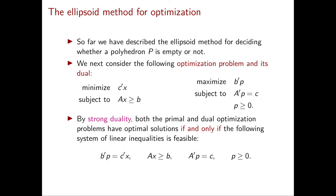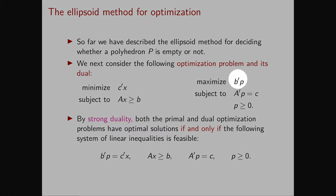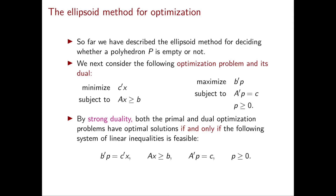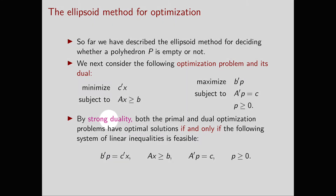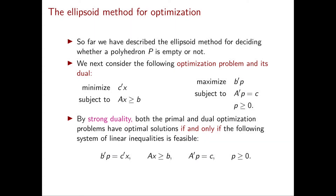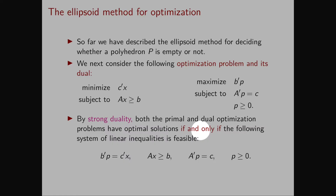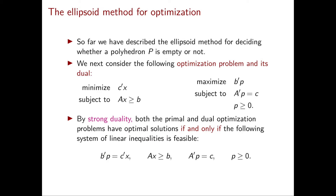Let's say that the linear programming problem we want to solve is: minimize C transposed X subject to AX greater than or equal to B. We write down the dual of our linear programming problem, which is: maximize P transposed B subject to A transposed P equal to C and P greater than or equal to 0. Now we use strong duality, which implies that both the primal and the dual have optimal solutions if and only if we have a primal feasible solution and a dual feasible solution with the same costs.